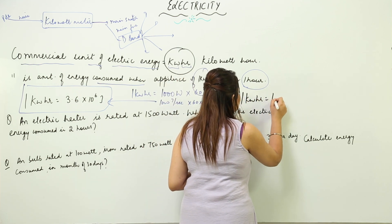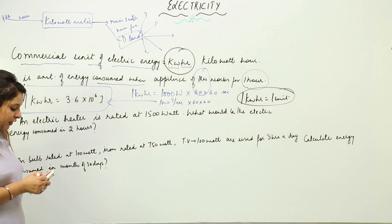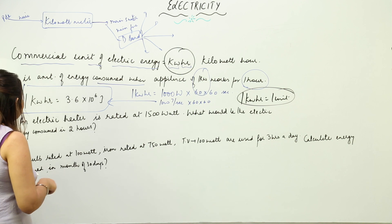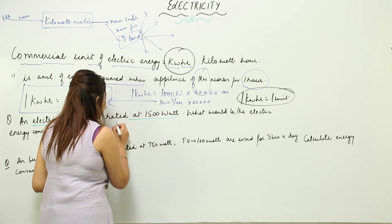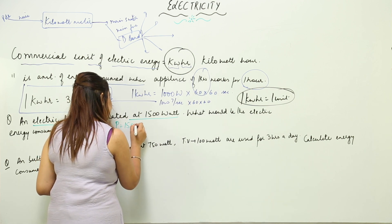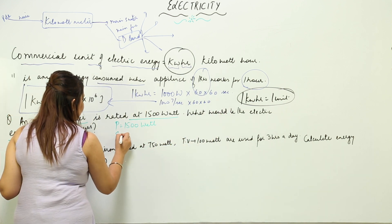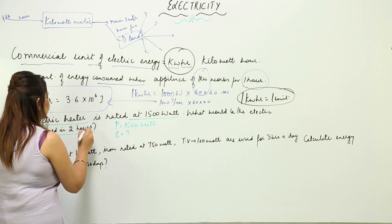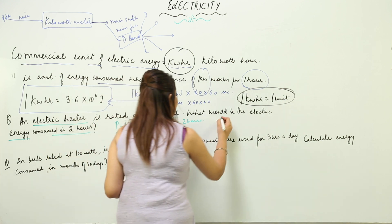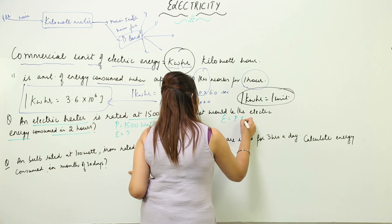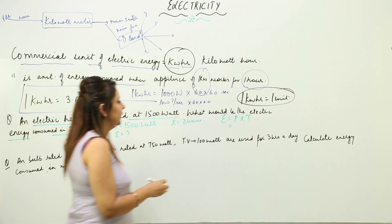Also remember that 1 kilowatt hour equals 1 unit. Now let's take up a question. We have an electric heater rated at 1500 watts, so power is 1500 watts. We need to find the electric energy consumed when it is used for 2 hours, so time is 2 hours. We know that electric energy equals power multiplied by time.